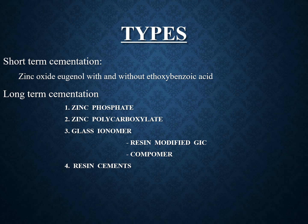Coming to the types, we can broadly divide cements into short-term and long-term cements. Short-term cements include zinc oxide eugenol (ZOE), with and without ethoxy benzoic acid (EBA). Long-term cementation includes zinc phosphate, zinc polycarboxylate, glass ionomer — which can be divided into resin-modified GIC and compomers — and resins.